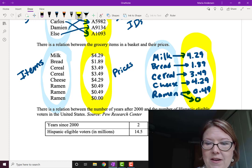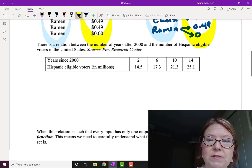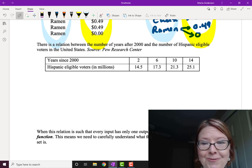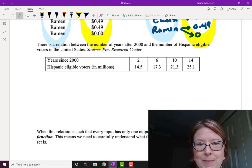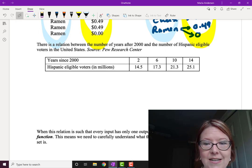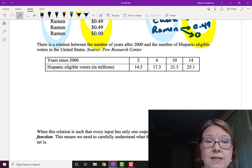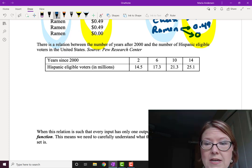Here's a relationship that comes out of the news. This is a relationship between the number of years after 2000 and the number of Hispanic eligible voters in the United States. So we have four pairs of data points, and we could write out a set for this one. So the top line represents years after 2000, and we have 2,